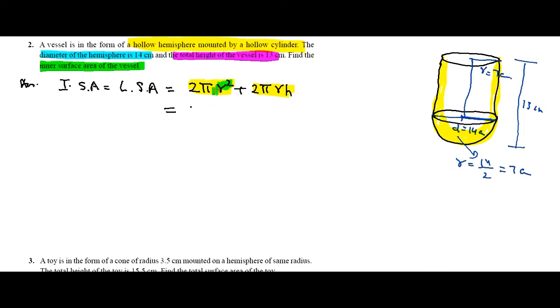In both formulas, the hemisphere and cylinder radius is the same, so r will remain the same. But this h, this height refers to the cylinder's height, because this whole formula is for the cylinder's lateral surface area. So I will have to find the cylinder's height now.